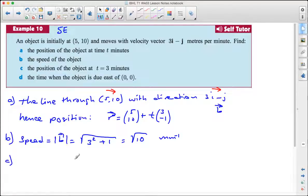C, the position of the object at t equals 3 minutes. We just have to substitute t equals 3 into the position vector, so that will be (5,10) plus 3 times (3, negative 1), which makes it (14, 7). Right, 5 plus 3 times 3 is 14, and 10 take away 3 is 7.